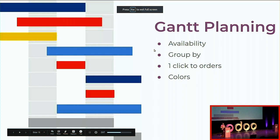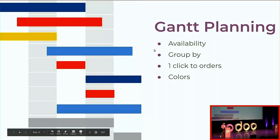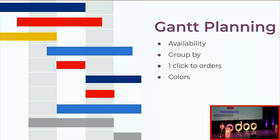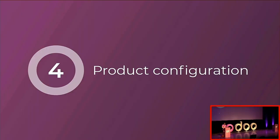The Gantt view allows you to see product availability. You can group by product, category, tag name, or anything else. Jump to the order in one click, and with the colors see which product is reserved, picked up, or a late return. Now let's see how to configure a product for the rental application.